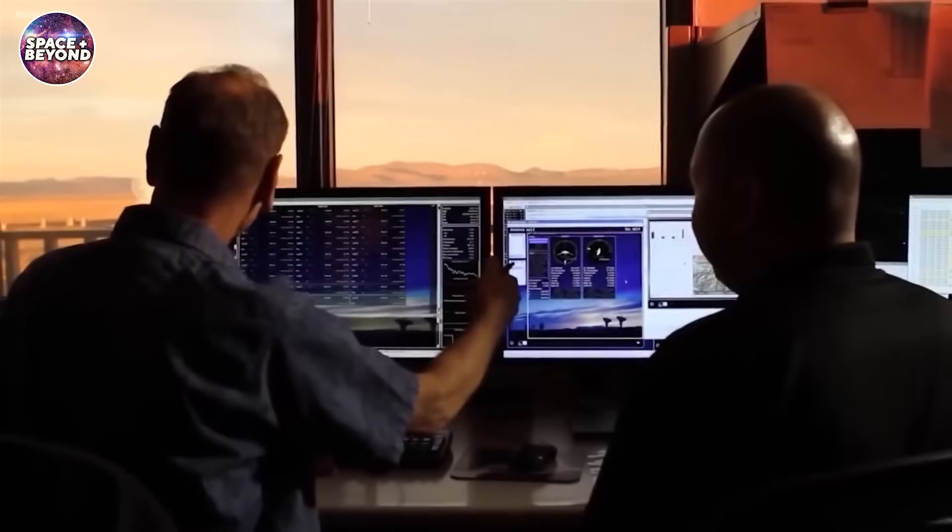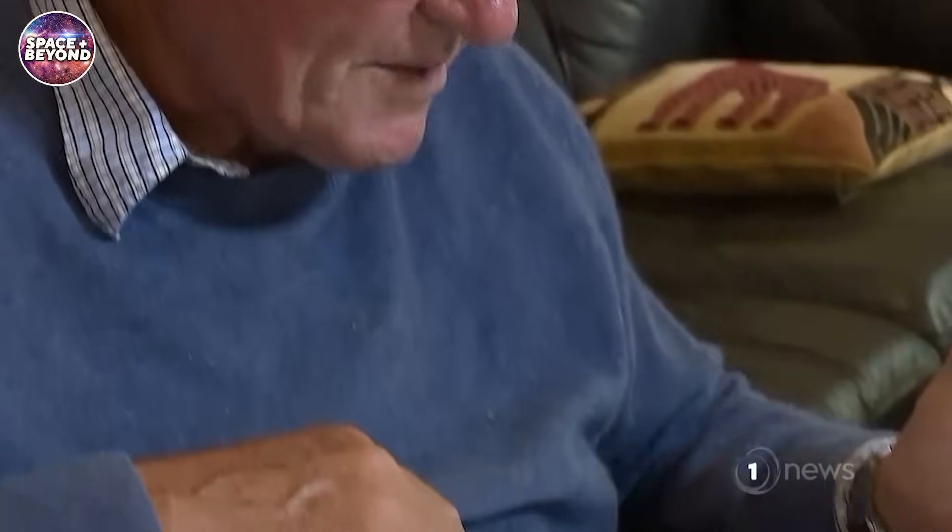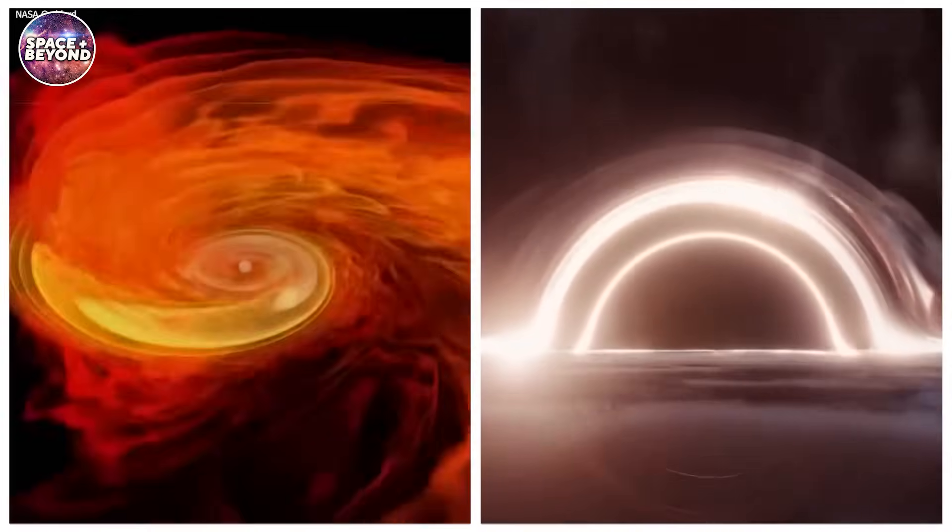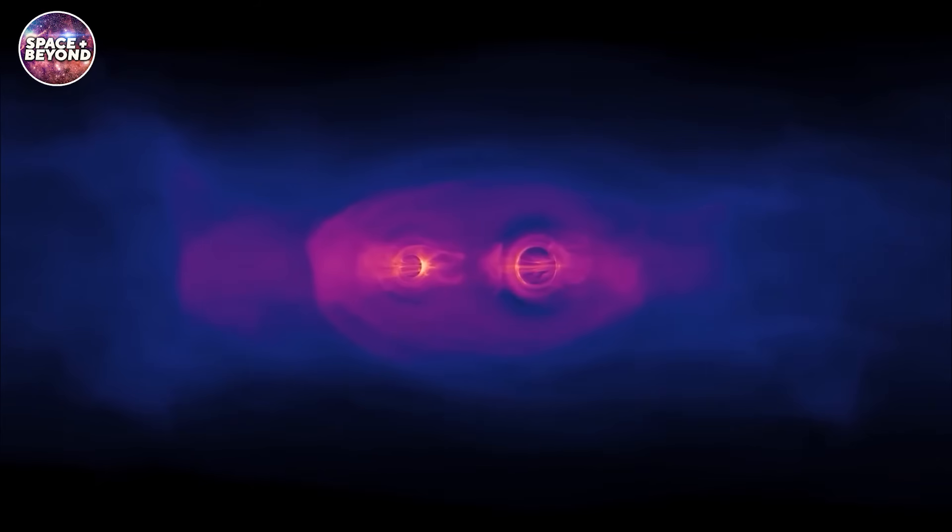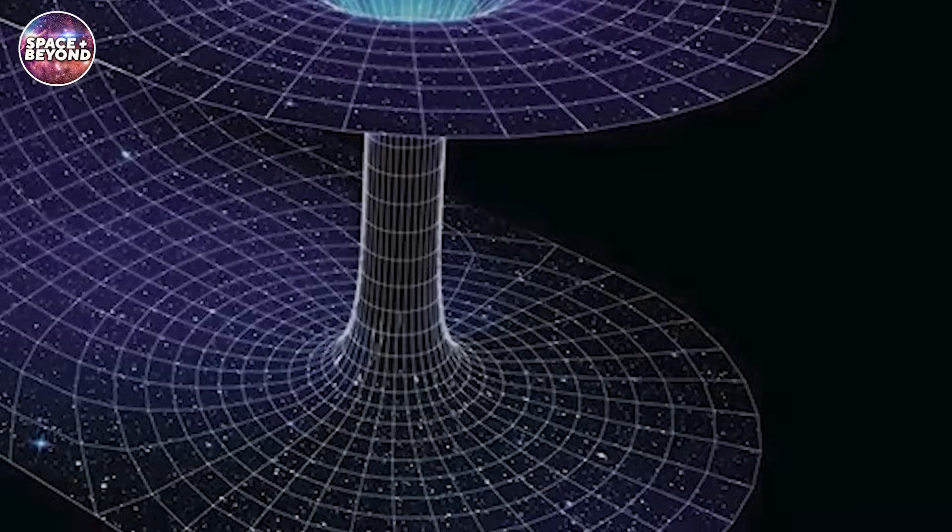But there is so much controversy in the science community as to the existence of a white hole, and whether they can even exist in the universe at all. Roy Kerr's theory that a black hole in this universe may lead to a white hole in another universe through a wormhole isn't that far-fetched logically, but it is scientifically hard to prove.